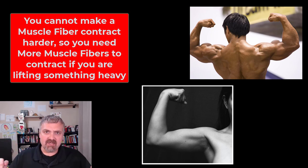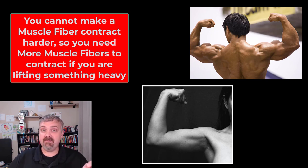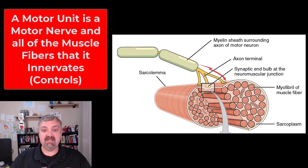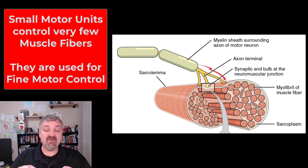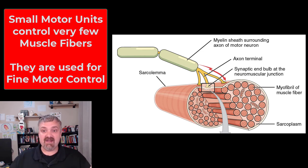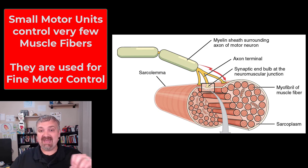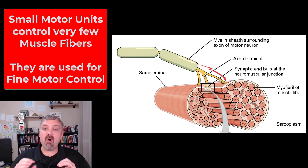How much tension a muscle will actually produce depends on the total number and type of motor units stimulating the muscle fibers. A motor unit is a motor nerve — a motor neuron — plus all the muscle fibers that it innervates or controls. Small motor units control as few as three or four individual muscle fibers, so they don't generate a lot of force. Think about fine motor control: playing a piano, writing — things that don't take brute force but take manual dexterity. These are usually controlled by small motor units.